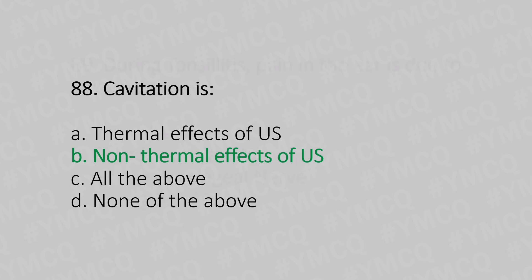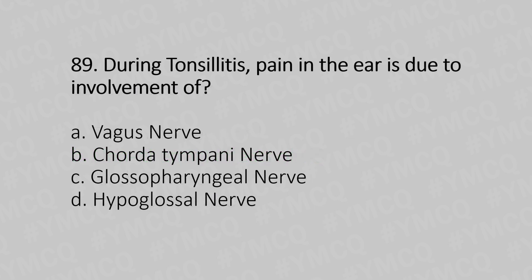Question 89: During tonsillitis, pain in the ear is due to the involvement of — option A: vagus nerve; option B: chorda tympani nerve; option C: glossopharyngeal nerve; option D: hypoglossal nerve. The answer is option C: glossopharyngeal nerve.